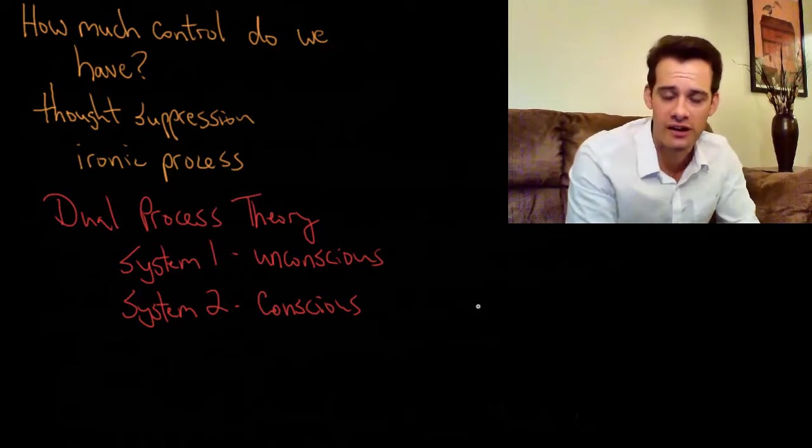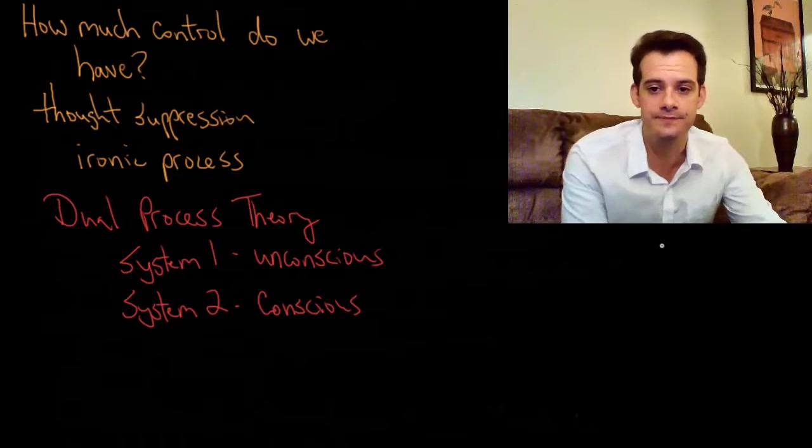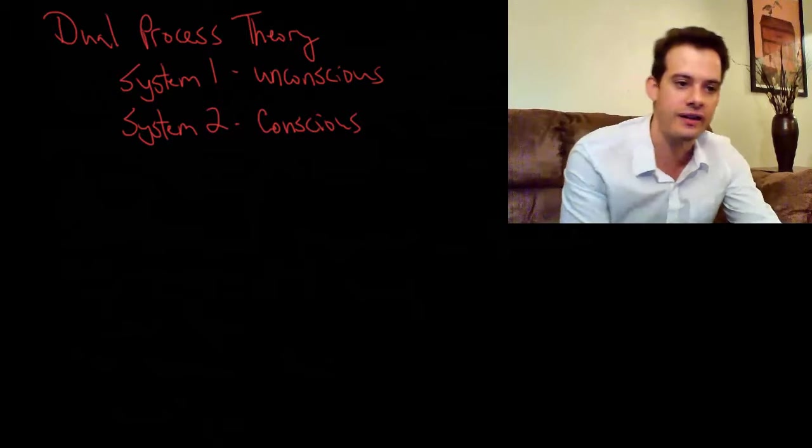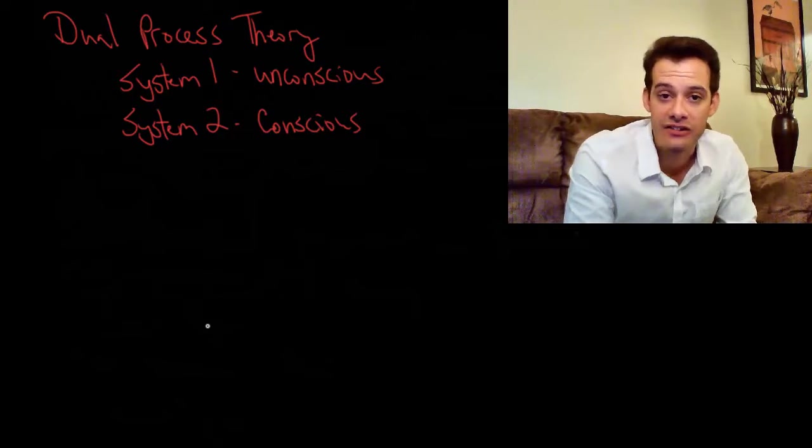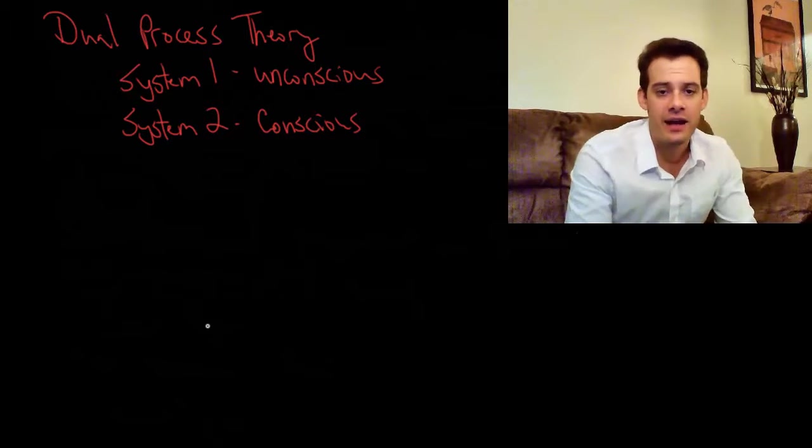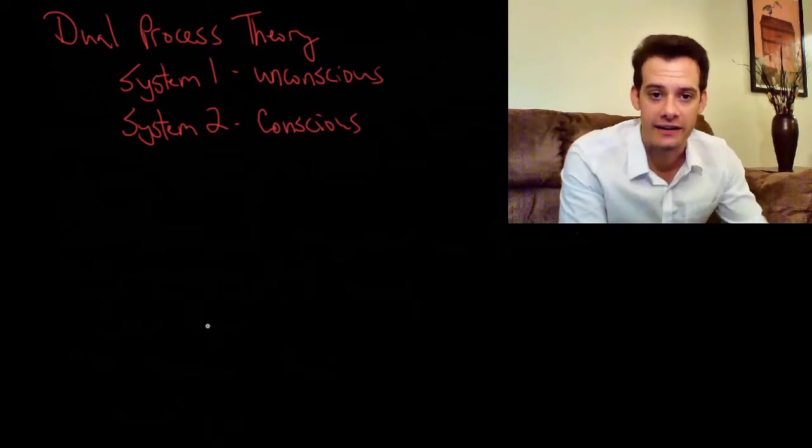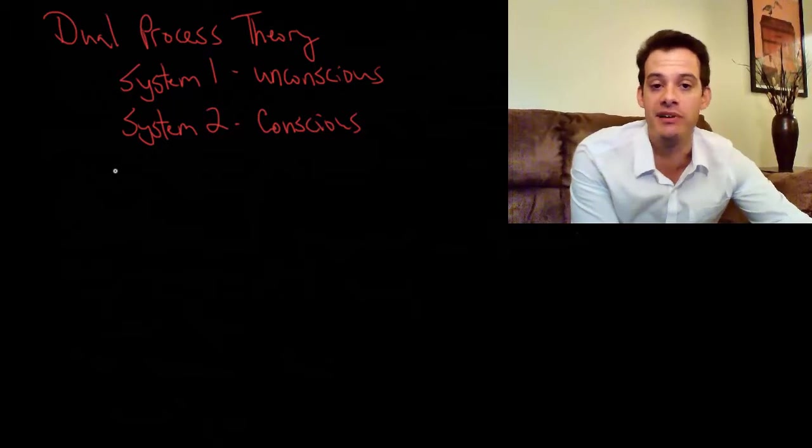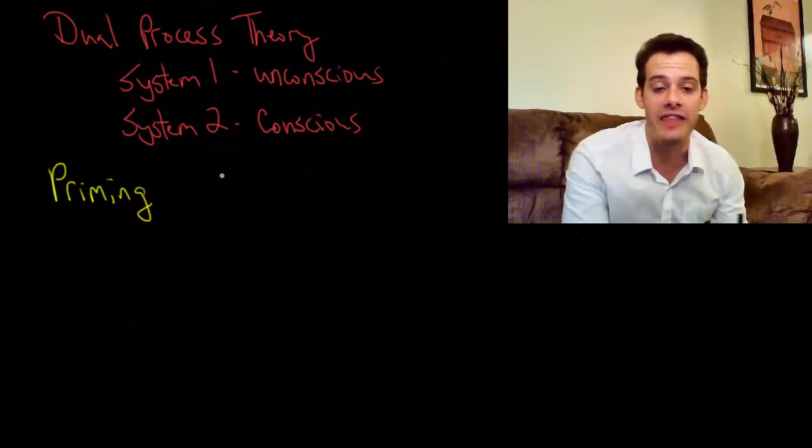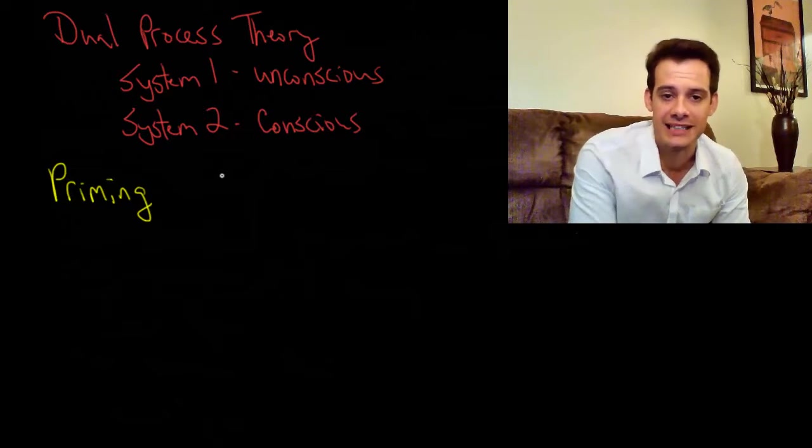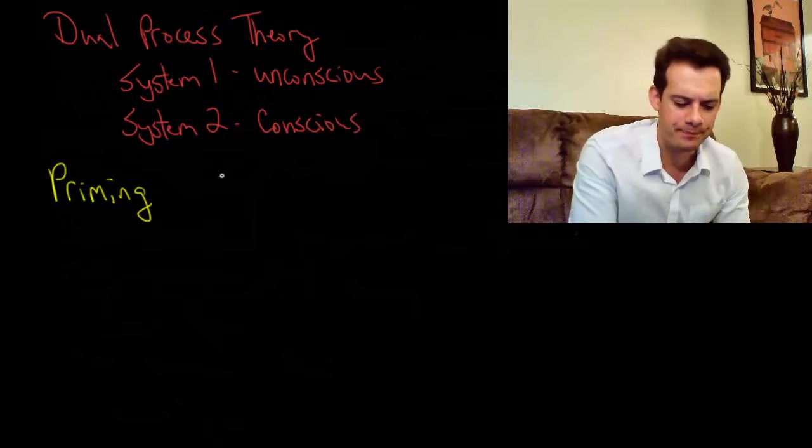We might wonder about the relationship between unconscious and conscious decision making. Some of this unconscious information that's being collected, is that influencing our conscious decision making, and how? So this brings us to a potentially controversial subject in psychology. It actually wasn't all that controversial a few years ago, but now it's more controversial. So how did this happen? Well, there's been this replication crisis in psychology recently, as people are calling it. And this is the idea that many classic studies have failed to replicate. So researchers try to repeat the studies, and they end up not finding the same effect. And so one focus of this replication crisis has been research on priming.